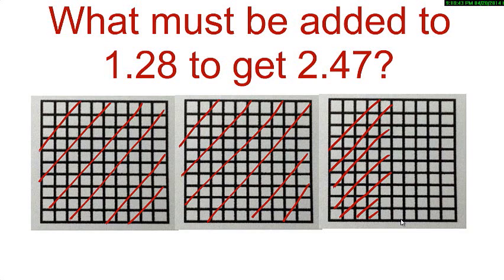Now, remove 1.28 from the grid so that you can find the number that needs to be added. To remove 1.28, shade 1 whole grid and 28 squares of another grid in any other color. Now, count the number of unshaded squares. We have 119 squares.